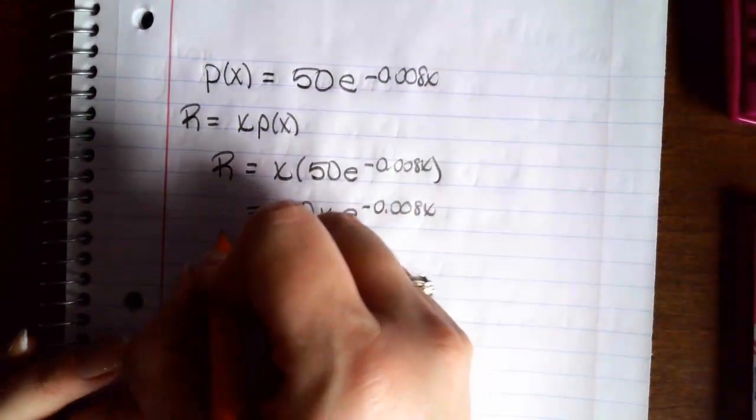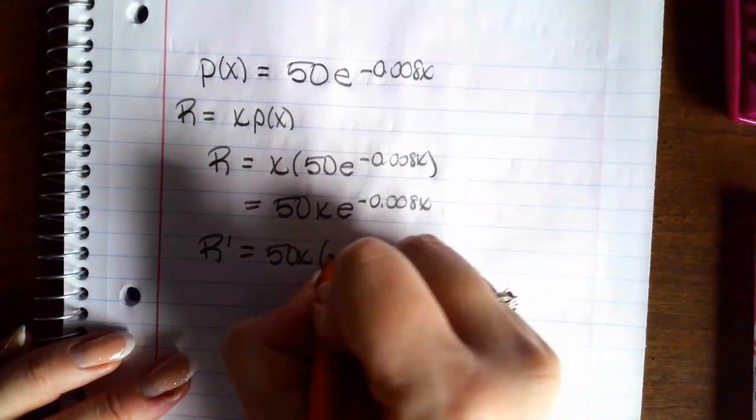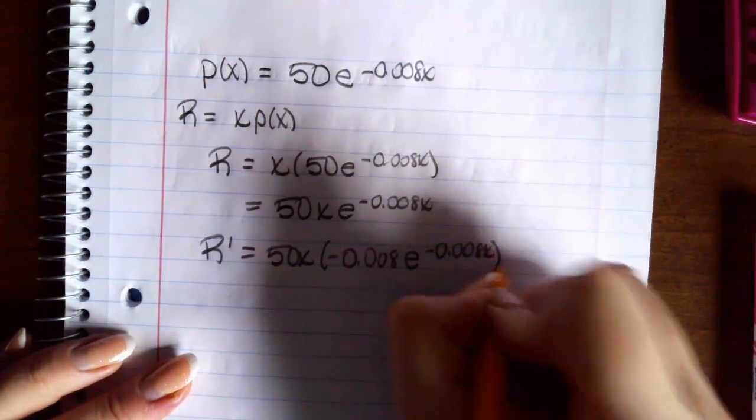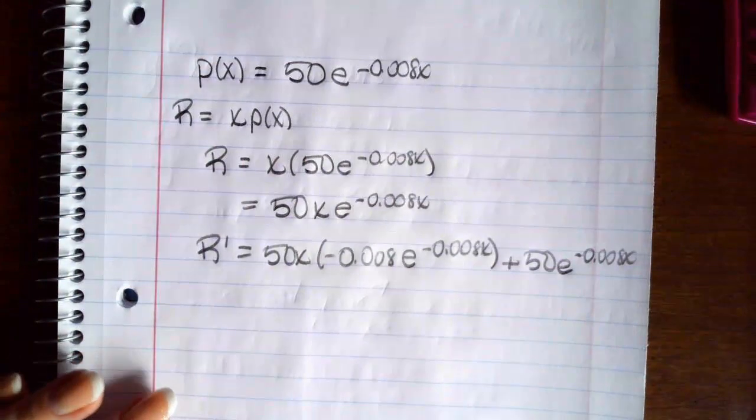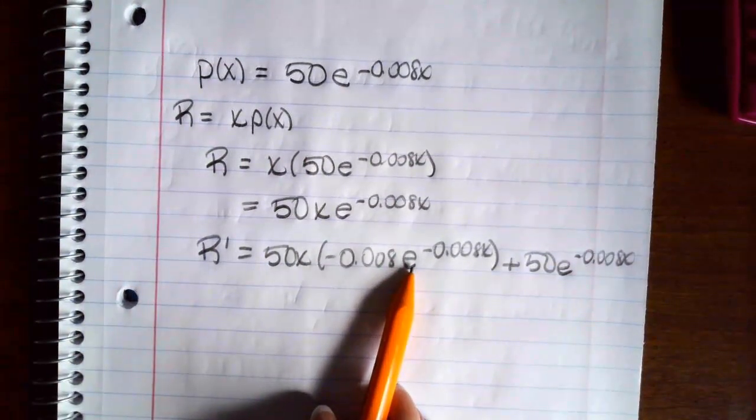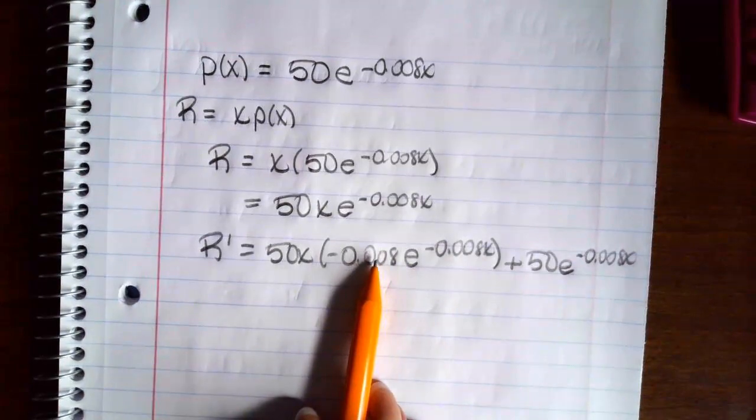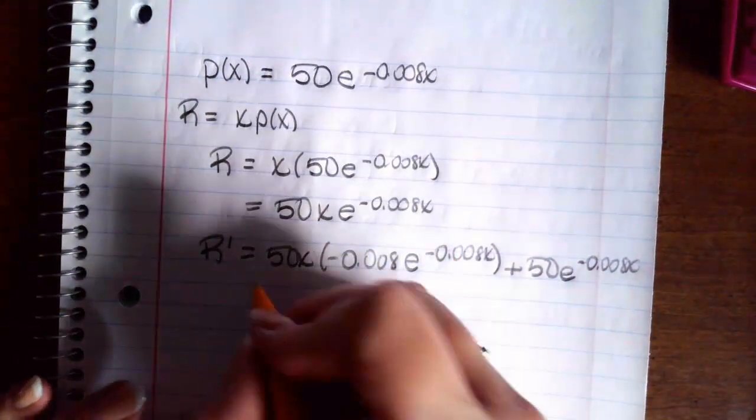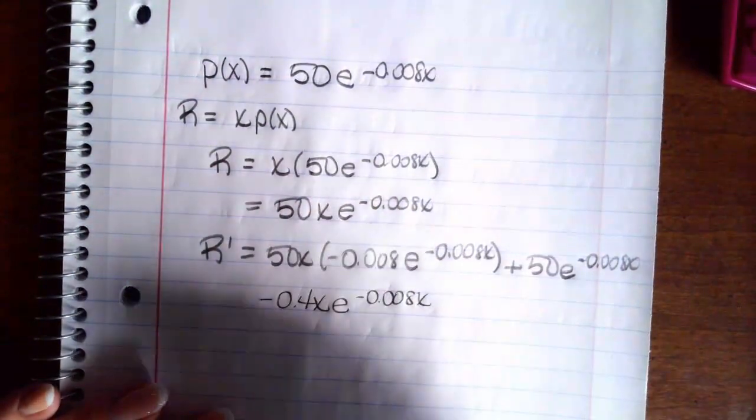So that means I need to take a first derivative. So the first derivative of my revenue is going to be the first times the derivative of the second plus the second times the derivative of the first. So remember that the derivative of e is you write what's sitting there times the derivative of your exponent. Okay, so 50 times negative .008 is negative .4.